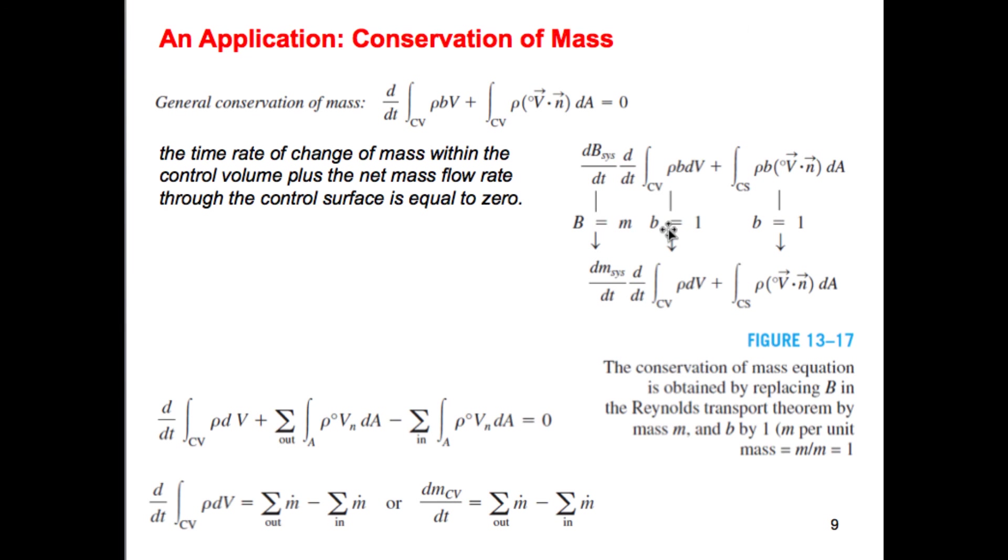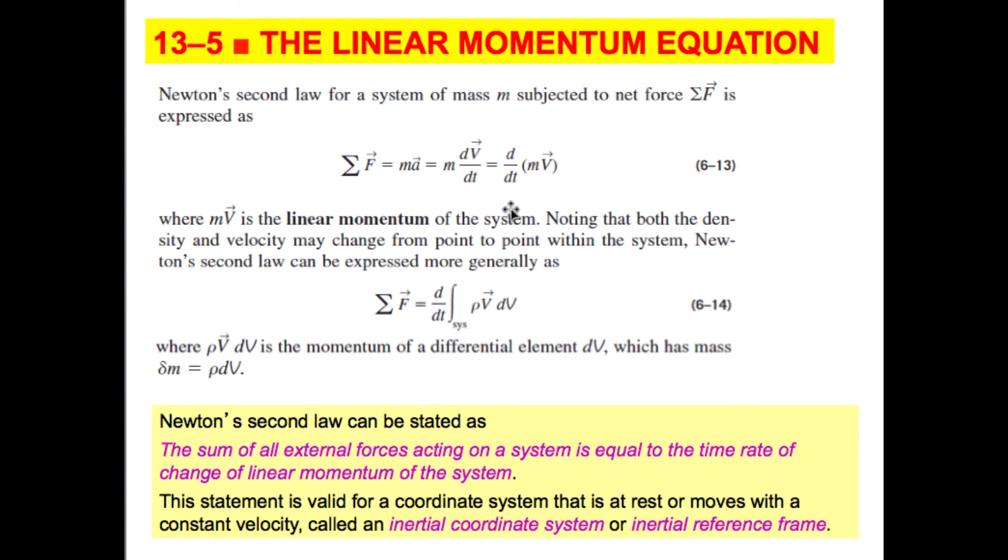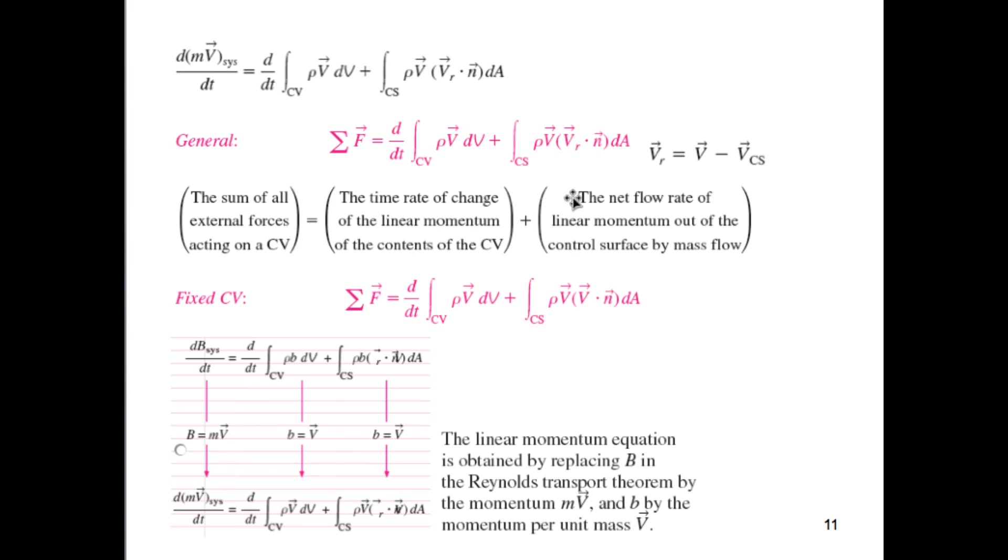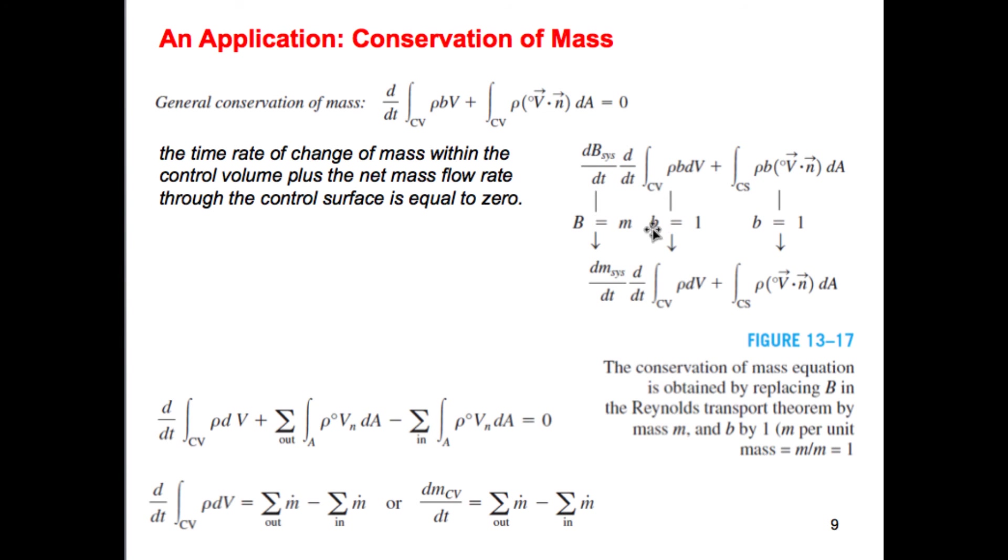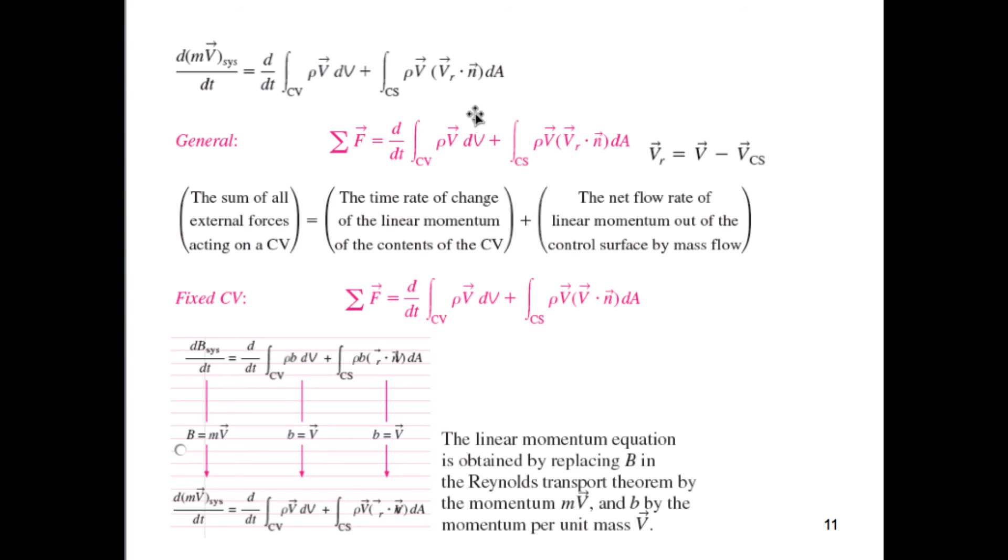So likewise, we can substitute now MV for our momentum, so this is DMV, little b would be just V, and we could plug that into here and obtain our conservation of momentum. So let's go to the conservation of momentum equation, which is here. So you guys see that we could just plug in, using our Reynolds transport theorem, now we have our general conservation of momentum equation. Let's get that out of here. So here, this is what you guys need to know.